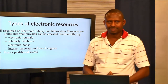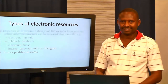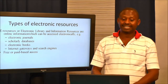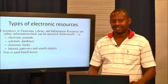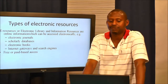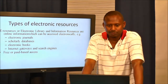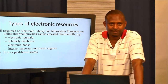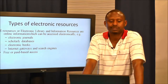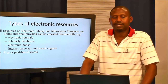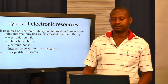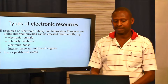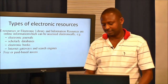We are going to see different types of electronic resources. Electronic resources, or electronic library information resources, are online information which can be accessed electronically. For example, we may mean electronic journals, scholarly databases, electronic books, internet gateways, and search engines, and among them we have free or paid database access.